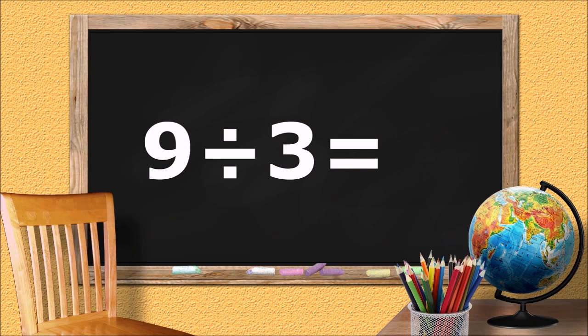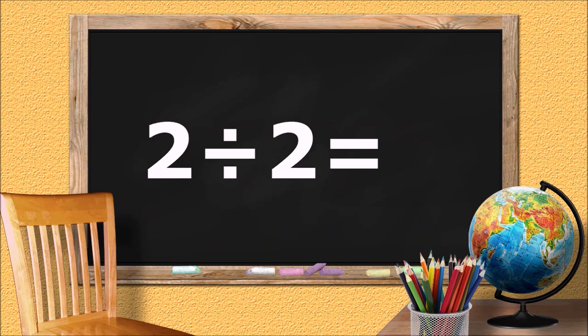Nine divided by three equals... three. Two divided by two equals... one.